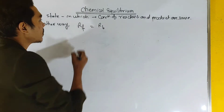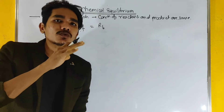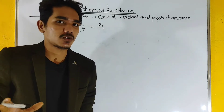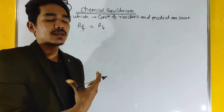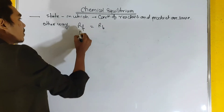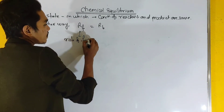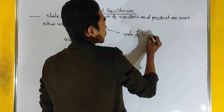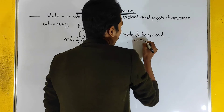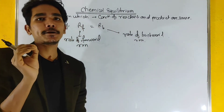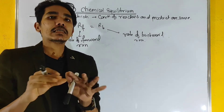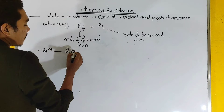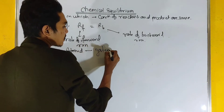The reactants and the products are the same at equilibrium. This is the rate of forward reaction and this is the rate of backward reaction. When the rate of forward reaction equals the rate of backward reaction, the reaction is at the equilibrium state.